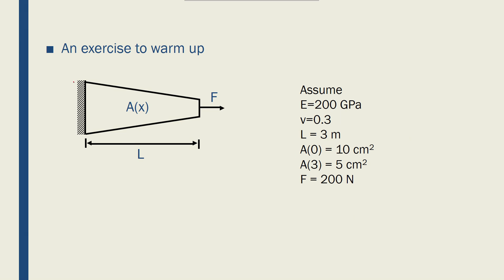If I have the coordinate system defined here and x equals 0 is there and x equals L which is 3 is here, so this is x equals 3 and this side is x equals 0.